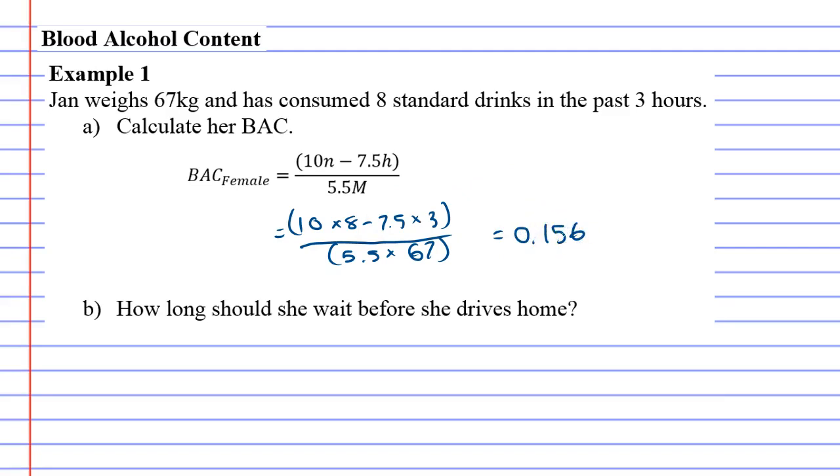First thing you'll notice is this is pretty bad. You definitely can't drive. This is three times over the limit, three times more than 0.05 for Australia. Question B says how long should she wait before she drives home.